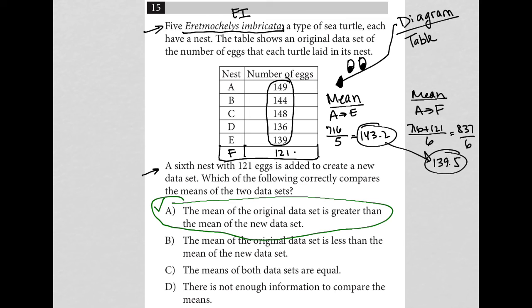Choice B, the mean of the original data set is less. Definitely not. Choice C, they're both equal. Definitely not. Choice D, there's not enough information. Definitely not, right? So I now even feel even better about choice A. So choice A is the correct answer here.